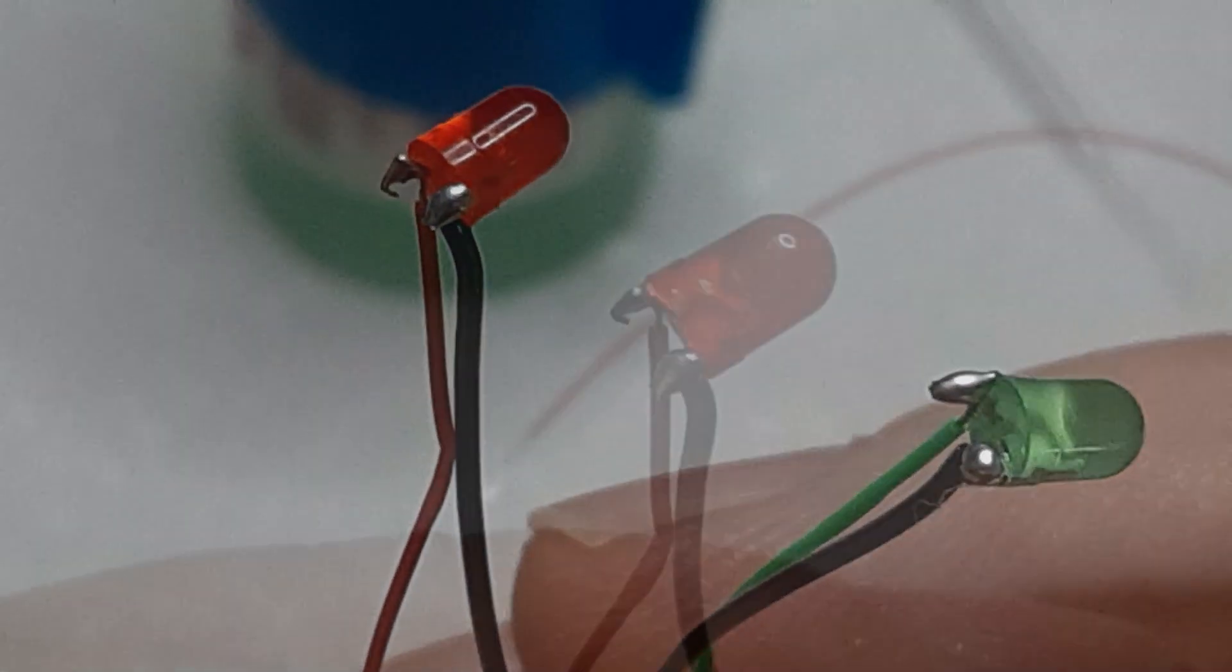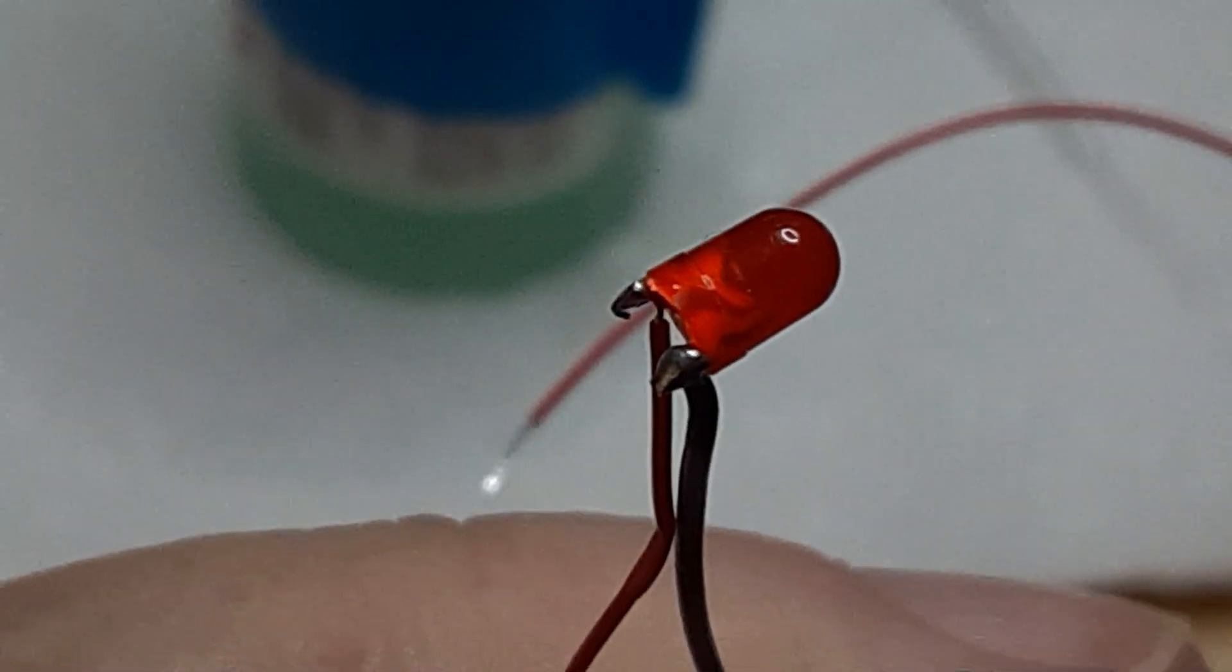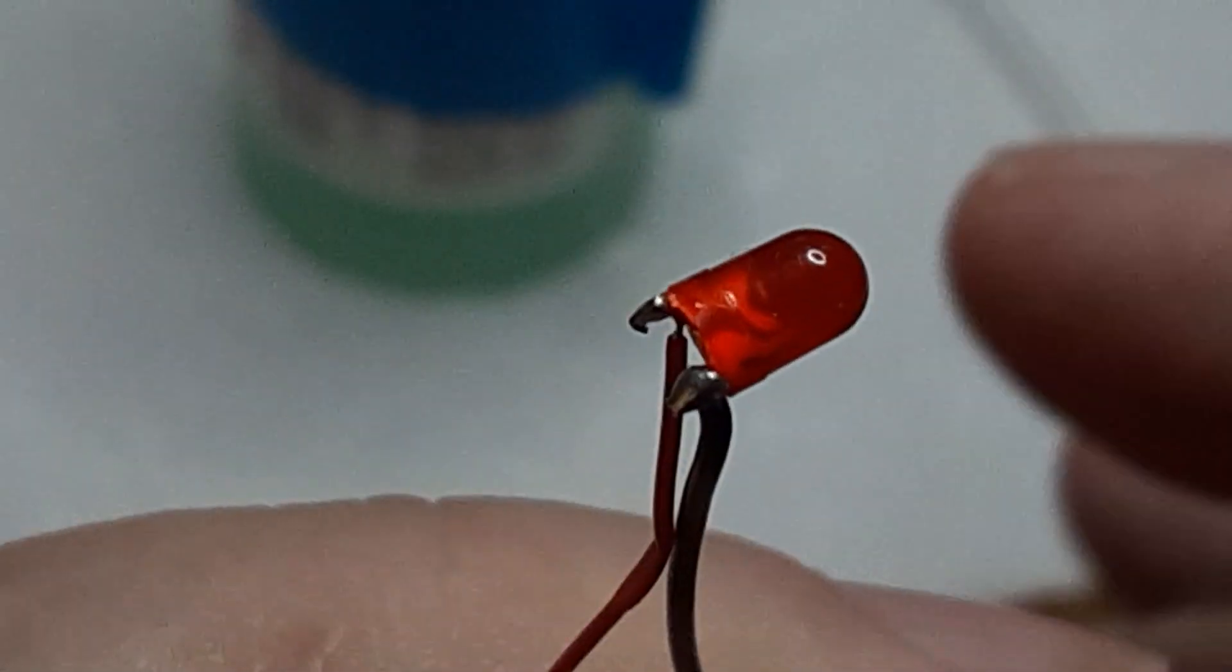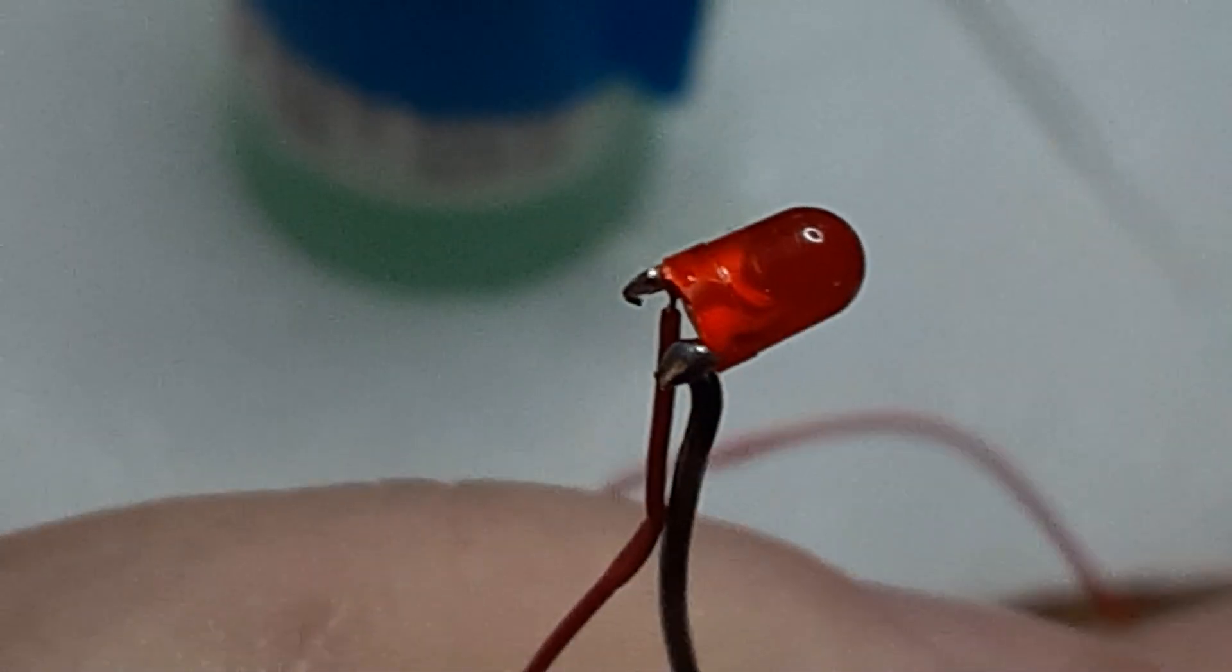Next, clip the cathode leads, leaving about a millimeter, and solder a short length of red wire to the red LED, and a short length of green wire to the green LED.